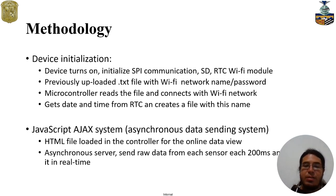We need to talk about the JavaScript Ajax system that is an asynchronous data sending system. This works in an asynchronous way, sending raw data. It has an HTML file loaded in the microcontroller for the online data application and it gives us IP direction so we can access to the website in the phone or in the computer to see the real-time data. This asynchronous server sends this raw data taken from the accelerometers each 200 milliseconds.